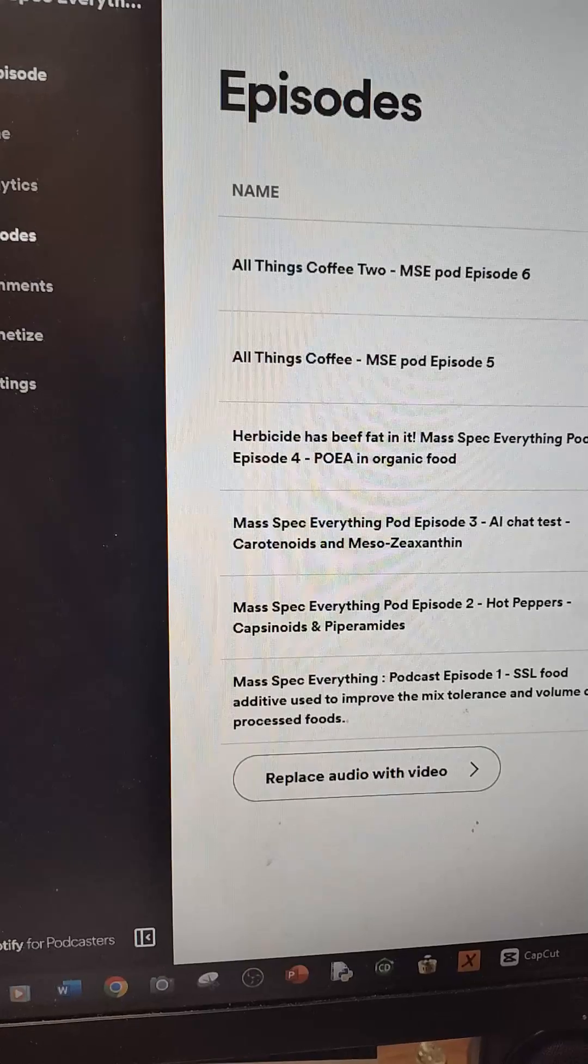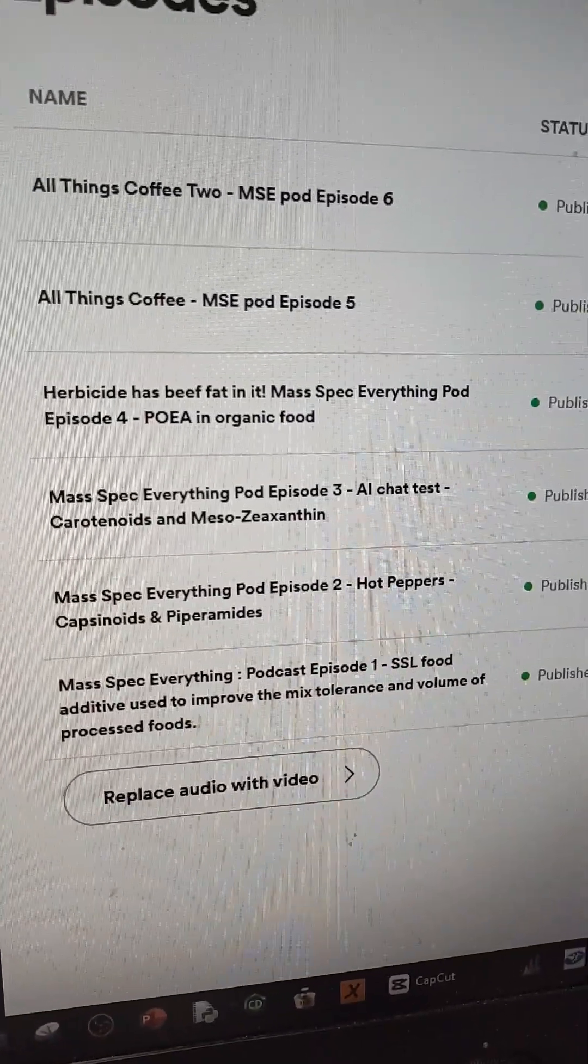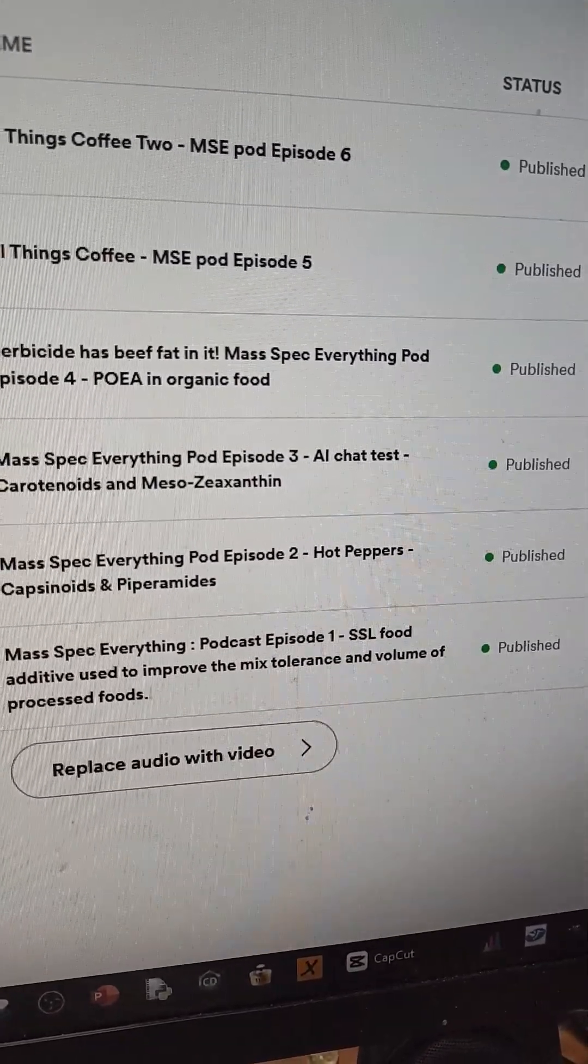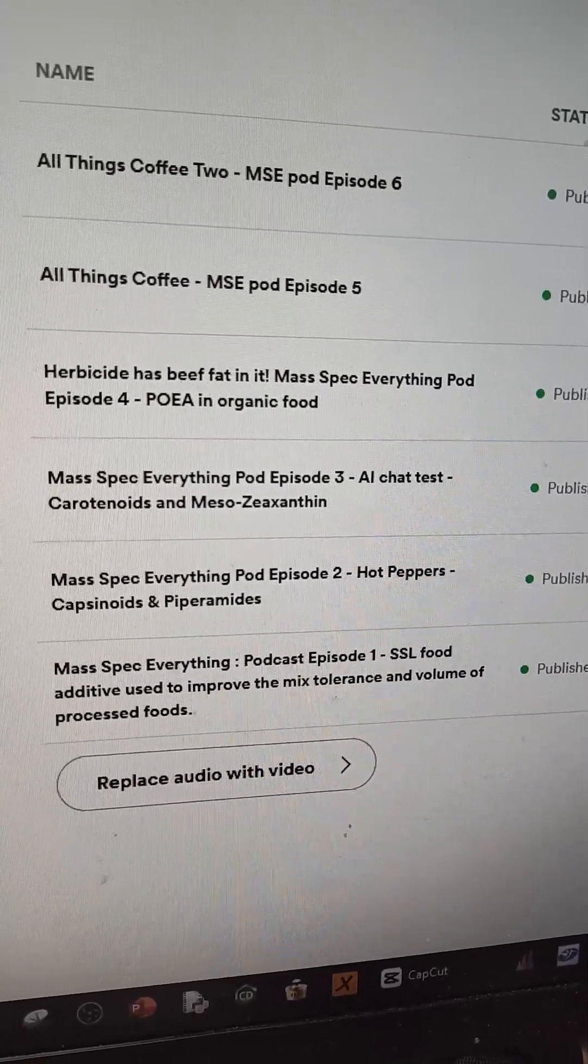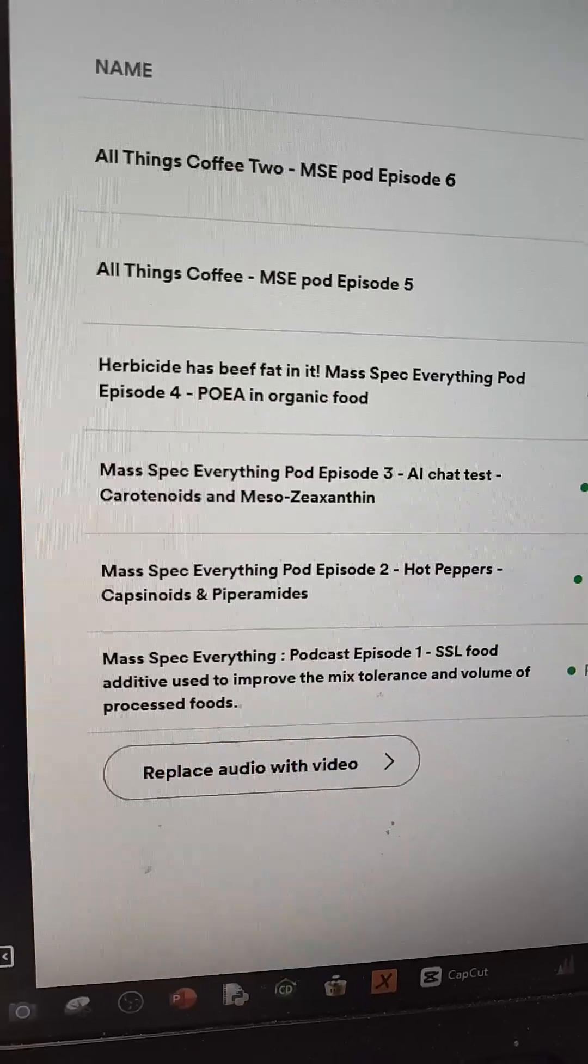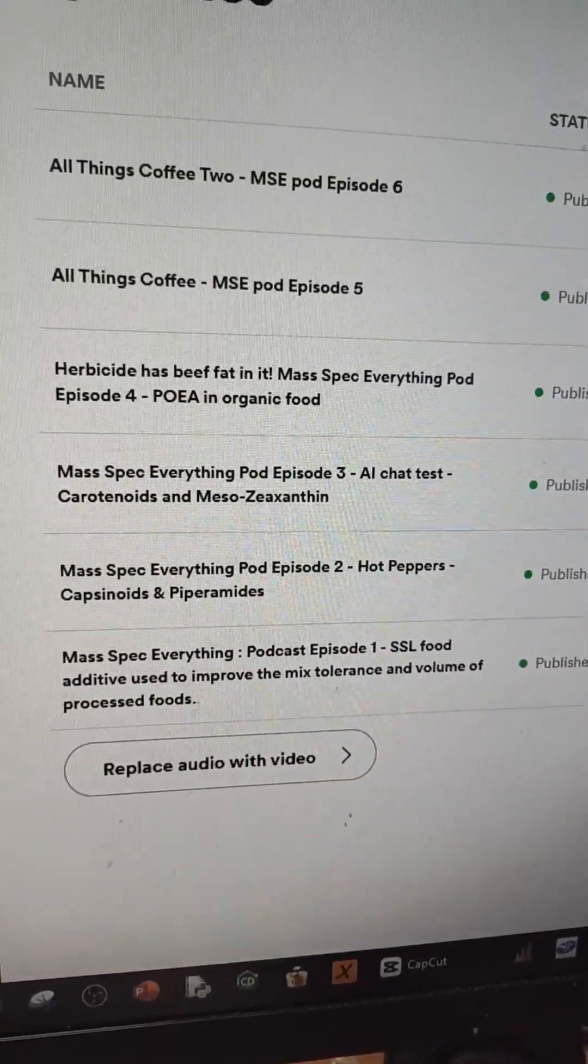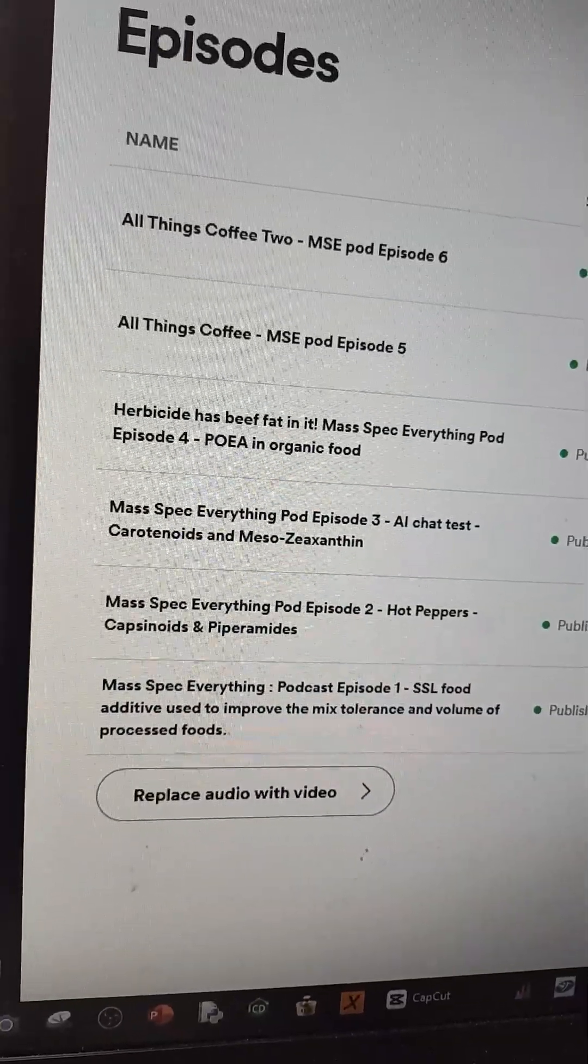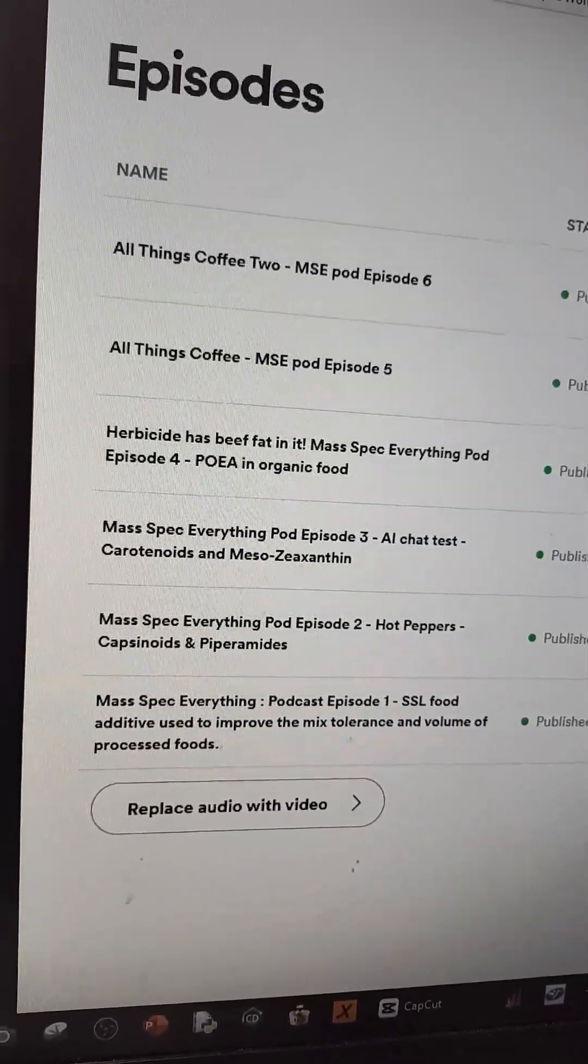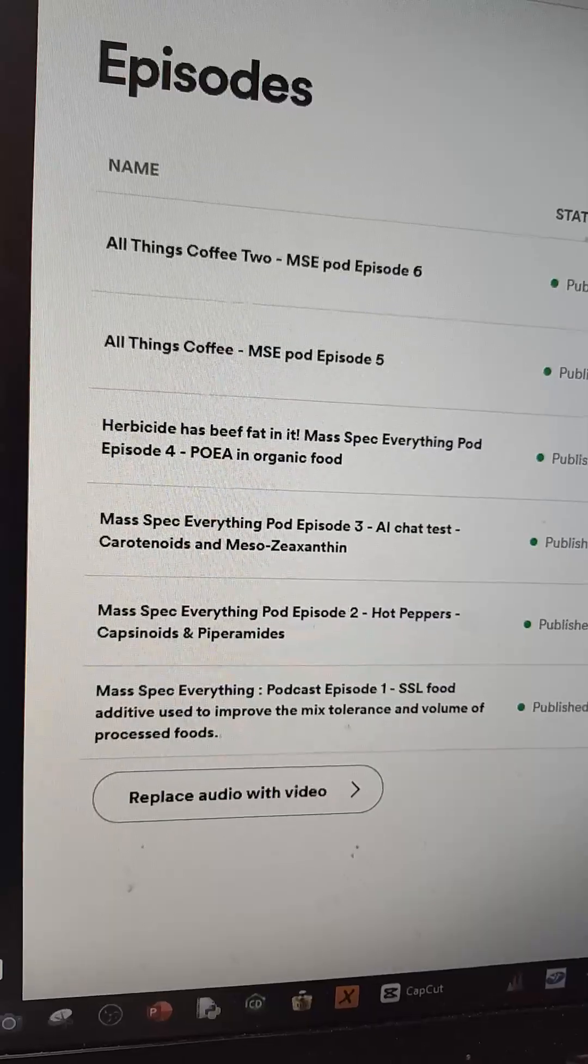Before we go look at the data, the MassSpec Everything Spotify pod has something relevant. Actually, the first episode, I didn't even realize that this would be relevant for oil. But this molecule SSL is an additive to improve mix tolerance in food, especially processed food. I bet you this is called lactic acid. It's a lactic acid conjugated.